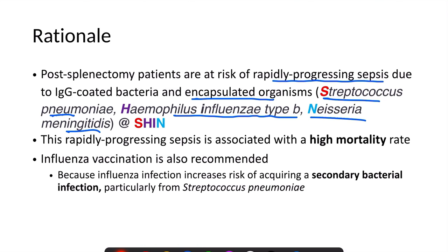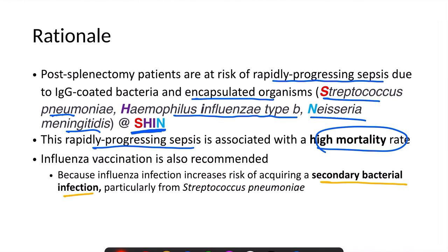You can remember these organisms using the mnemonic SIN. Infection with these bacteria is dangerous because it can cause rapidly progressing sepsis, which has a very high mortality rate. This is the reason why vaccination is recommended for patients who have functional or anatomical asplenia, along with patients planned for splenectomy or who have already undergone splenectomy. Influenza virus vaccination is also recommended because influenza infection increases the risk of secondary bacterial infection, particularly by Streptococcus pneumoniae.